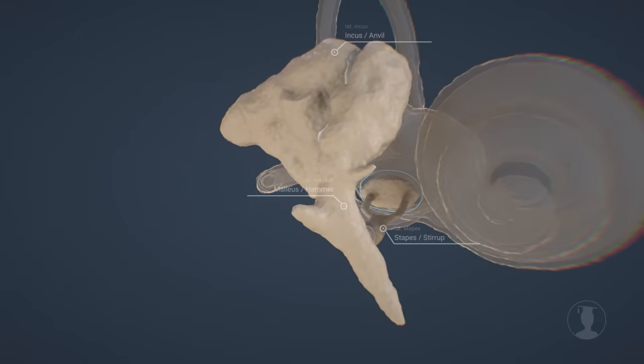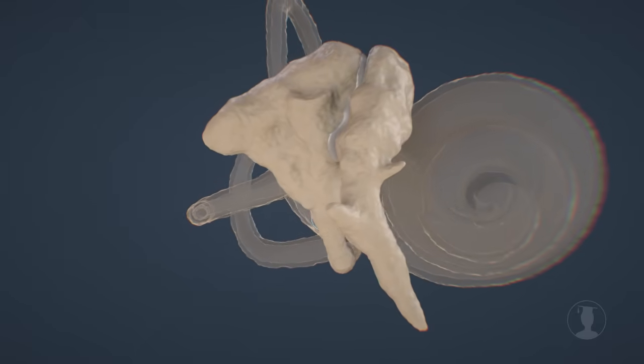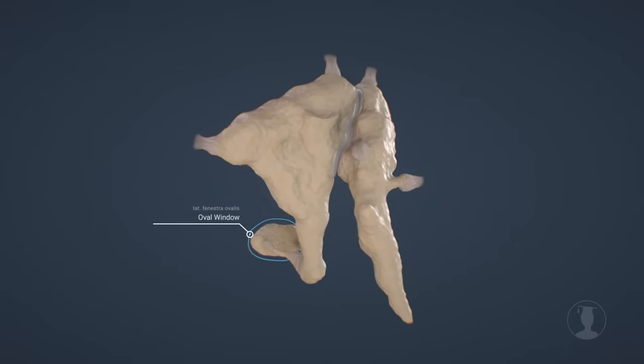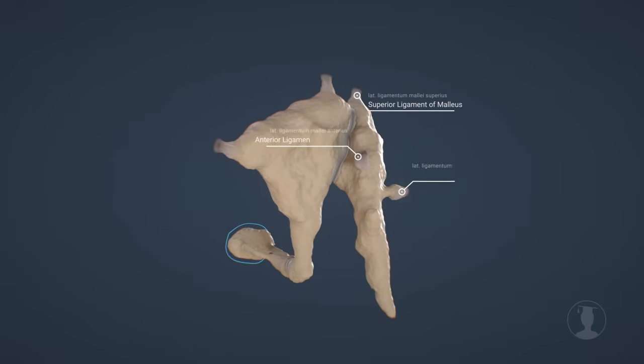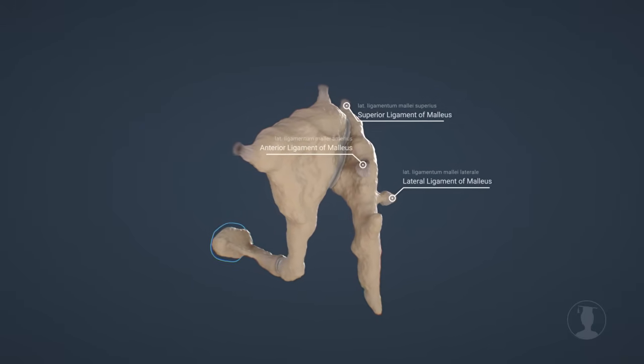The stapes is located at the oval window of the cochlea, which we will get to know in more detail later. The smallest bones in the human body are suspended inside the tympanic cavity with the help of ligaments.